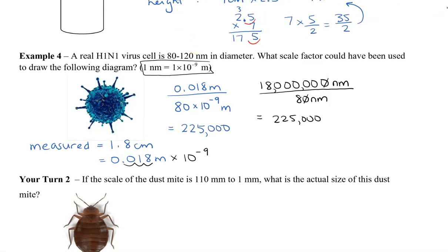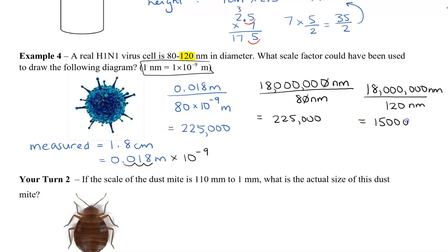To find the upper limit for 120 nanometers, we take 18,000,000 divided by 120 nanometers, which gives us 150,000. So the scale factor that could have been used is between 150,000 and 225,000, given that the virus is 80 to 120 nanometers. These two values are our scale factors.